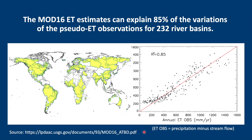So how accurate is the MODIS evapotranspiration product? A study on 232 river basins across the world compared pseudo evapotranspiration observations with MOD16 evapotranspiration data. The basins are shown in yellow on the left. The pseudo evapotranspiration observations are based on the difference between precipitation and stream flow over the basins, assuming that there is no change in soil water storage. As you can see on the cross-plot on the right, the MOD16 evapotranspiration data can explain 85% of the variations in evapotranspiration across the world, which makes it a really powerful tool for basin water balances.